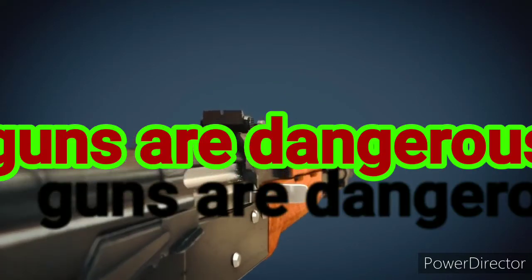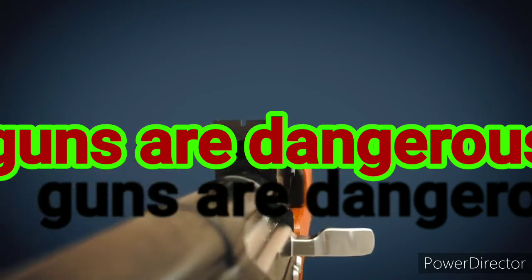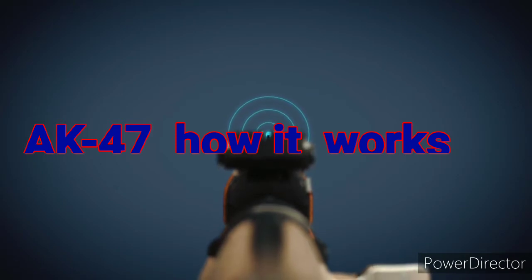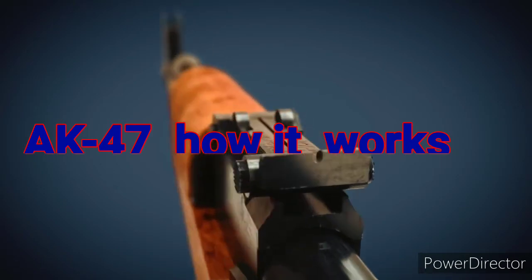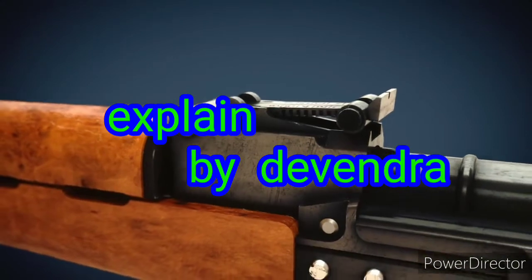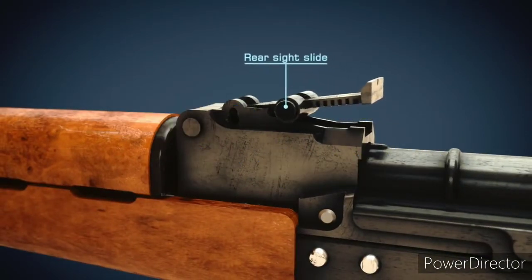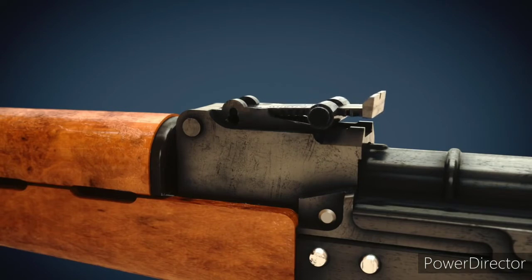The shooter aims with the help of rear and front sight. The sight leaf, which represents the rear sight, is available in 800 and 1000 meter versions. The maximum effective range is between 300 and 400 meters.